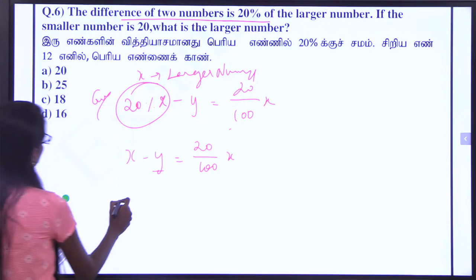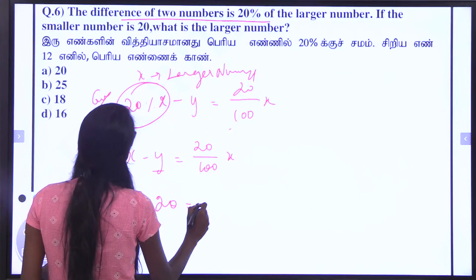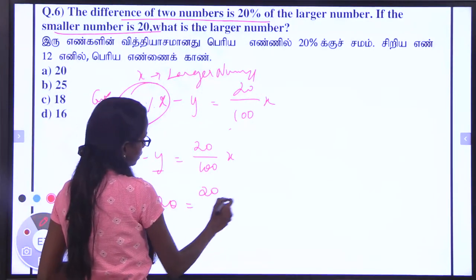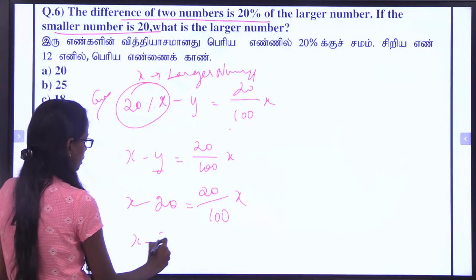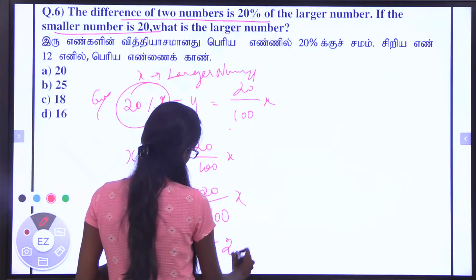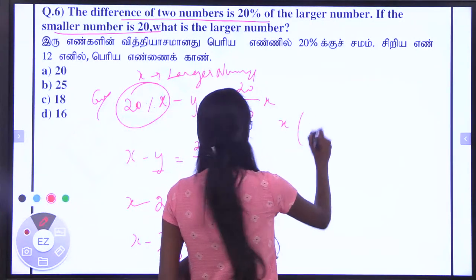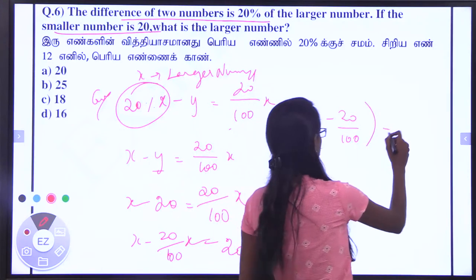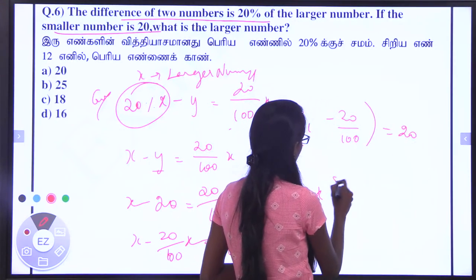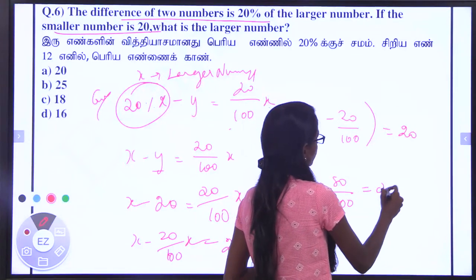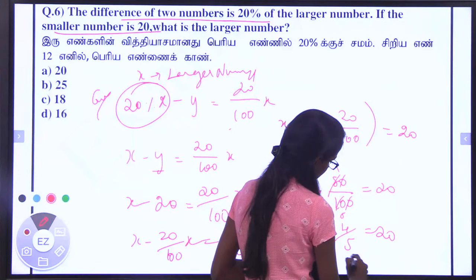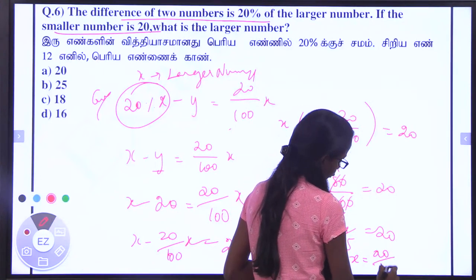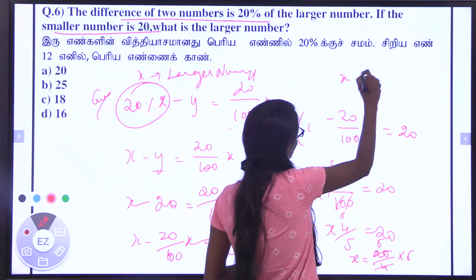The smaller number is 20. So x minus 20 equals 20 divided by 100 into x. Therefore x minus 20/100 into x equals 20, giving us 1 minus 20 divided by 100 times x equals 20. So x equals 100 minus 20, which is 80 divided by 100 equals 20. So 4 by 5 is equal to 20. Therefore x equals 20 divided by 4 into 5, giving x equals 25.